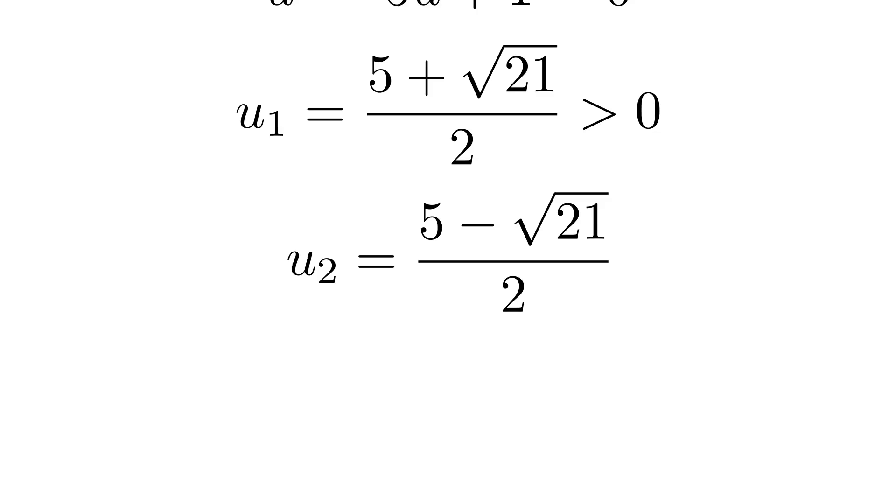Well, let's think about this. 5 is the same as the square root of 25, and since 25 is bigger than 21, 5 must be bigger than the square root of 21. So 5 minus the square root of 21 is indeed positive. Both of our u values check out. Great. Now we can go back to our original variable x and find the values we're actually looking for.